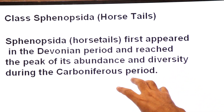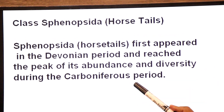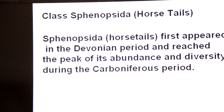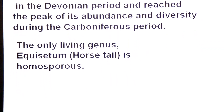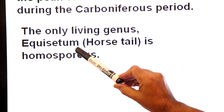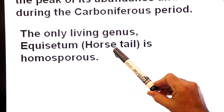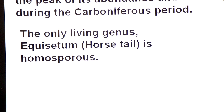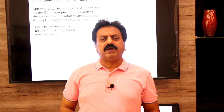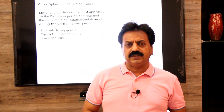Only one living genus will be studied; the rest are extinct. The only living genus is known as Equisetum, commonly known as horsetail, which is a homosporous plant. Dear students, a homosporous plant is one that produces the same type of spores, and whenever the sporophyte is homosporous, its gametophyte is always bisexual.